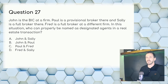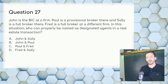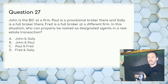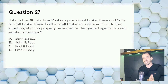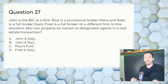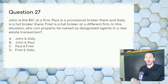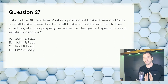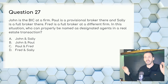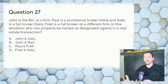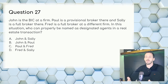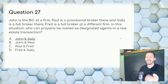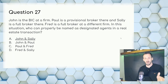Question 27: John is broker in charge, Paul is a provisional broker, and Sally is a full broker — all at the same firm. Fred is a full broker at a different firm. Who can properly be named as designated agents? We knock Fred out since designated agents work at the same firm. A provisional broker can't be a designated agent with someone supervising them. Answer: A — John and Sally.